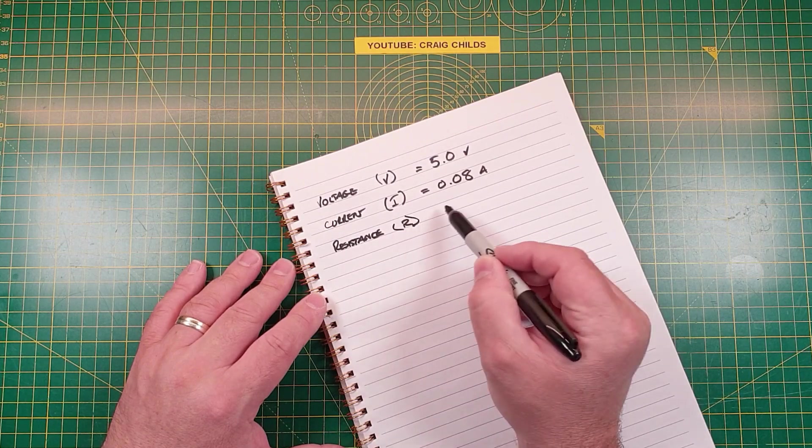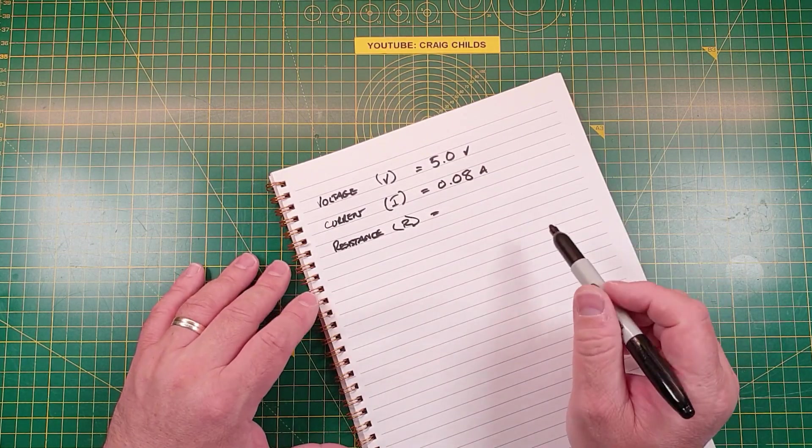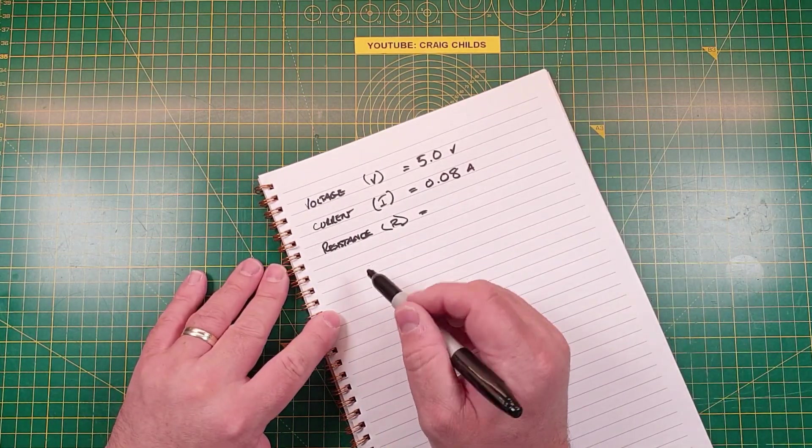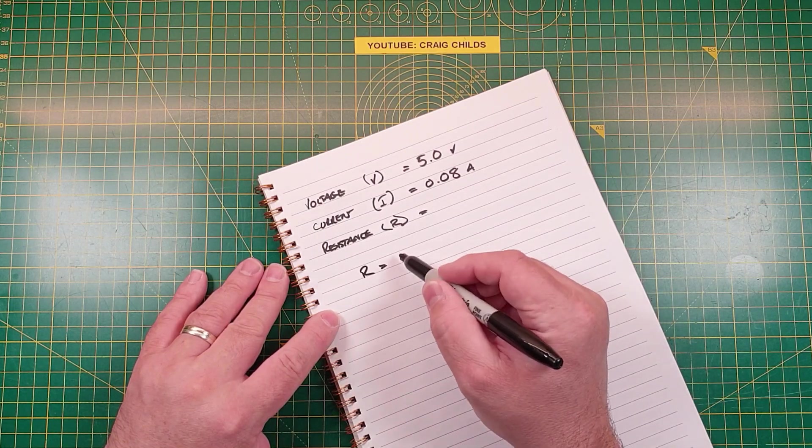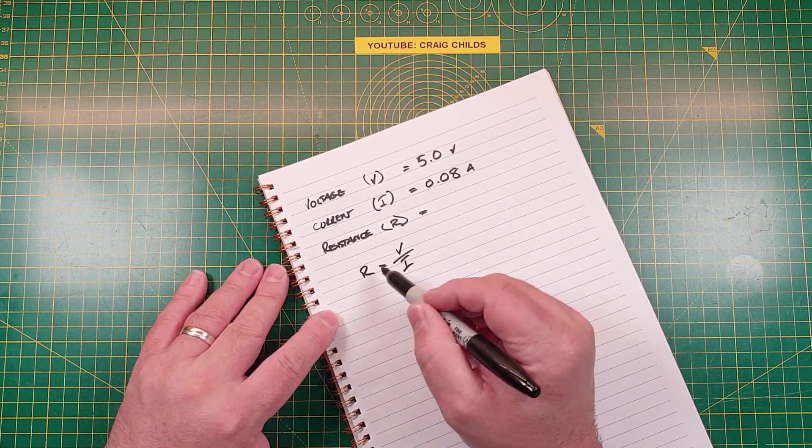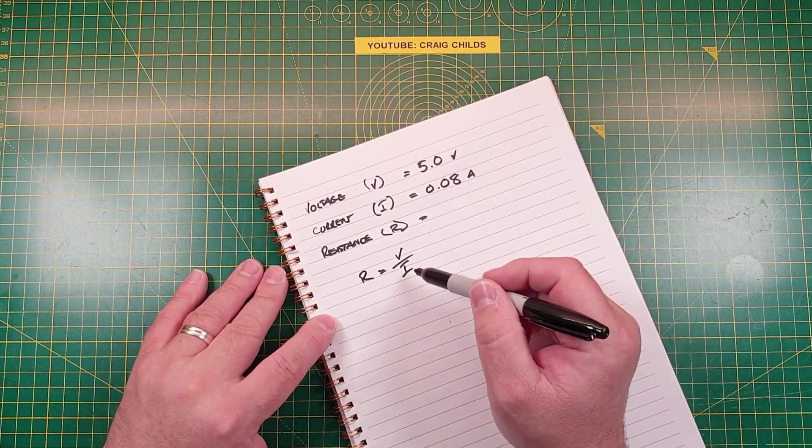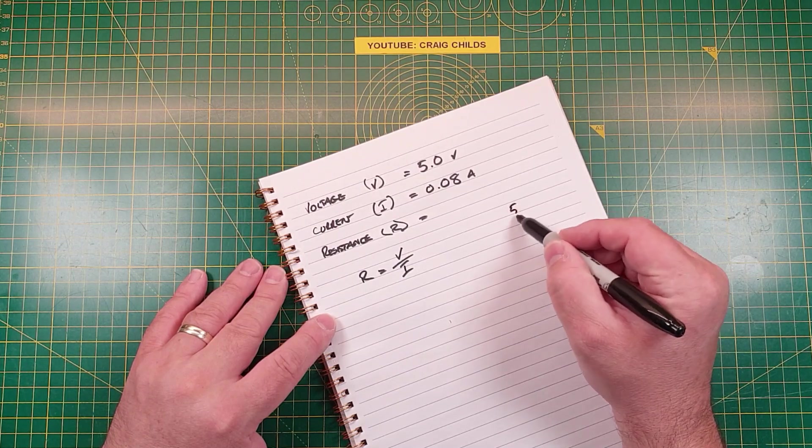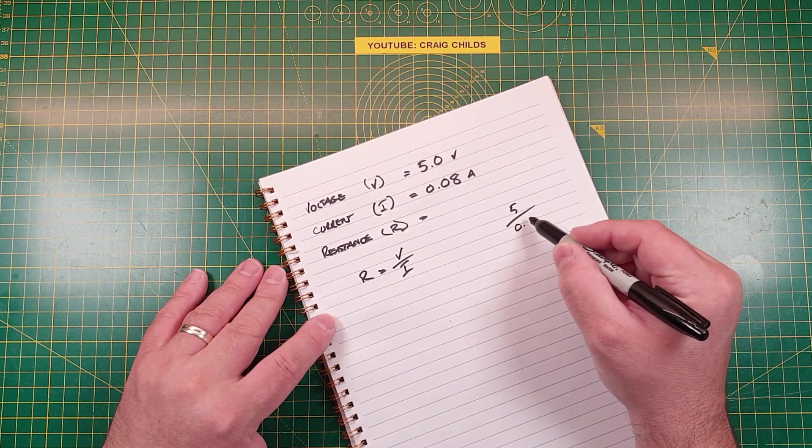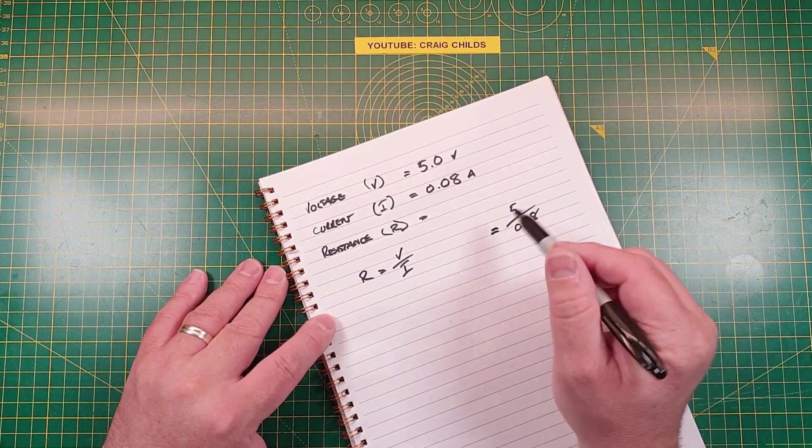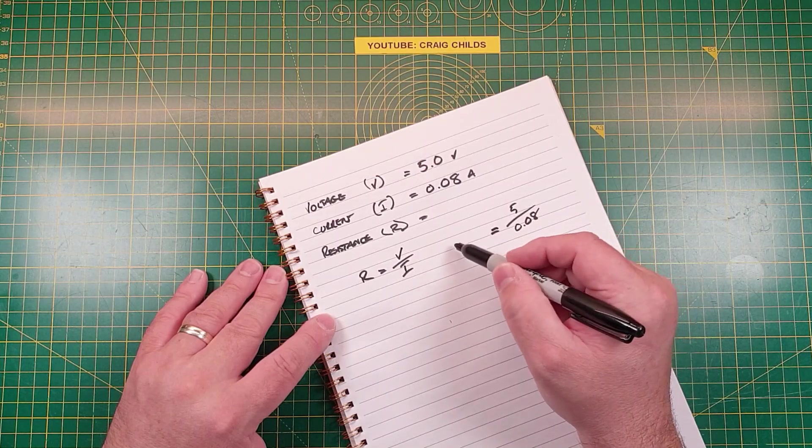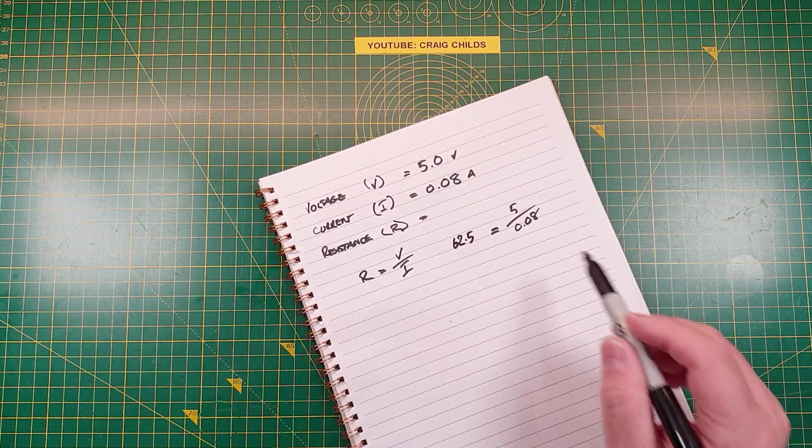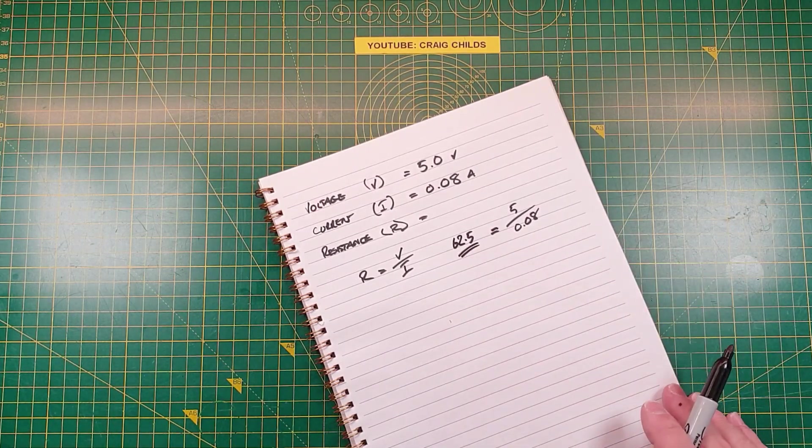And then we need to know the resistance, and that's R. So at the moment we don't know what that is until we calculate it. In order to calculate resistance, R equals voltage over I, or voltage divided by current. So we know the voltage is 5 and we divide that by 0.08, and that gives us a result of 62.5.